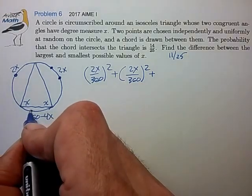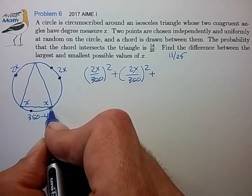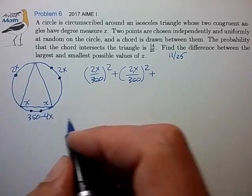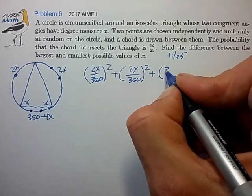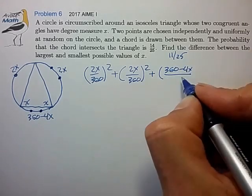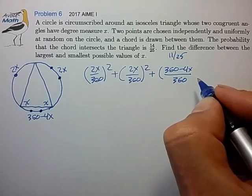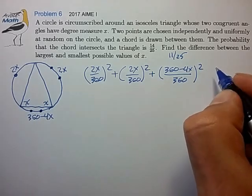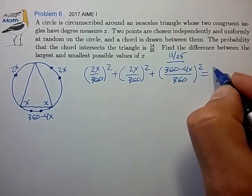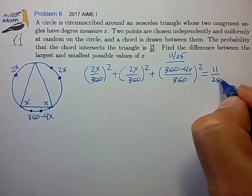And the probability that the first point is in this third region times the probability that the second point is also in this third region is 360 minus 4X over 360 squared. And we know that that probability that doesn't intersect is 11 over 25.